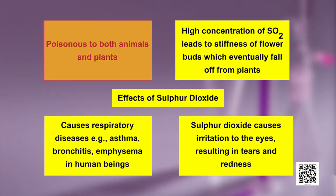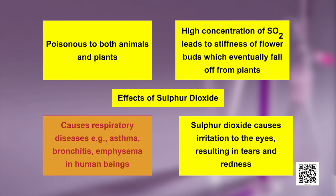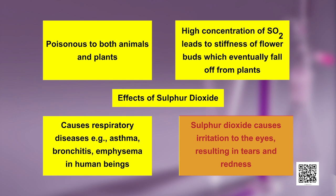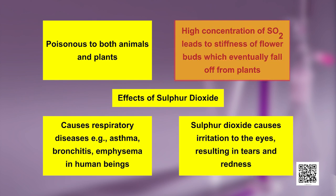Now let us discuss gaseous air pollutants. The first pollutant is oxides of sulphur. Coal and oil contain sulphur impurities. When we burn these fuels, the sulphur also burns to form oxides of sulphur. The most common oxide of sulphur is sulphur dioxide, SO2. Sulphur dioxide gas is very poisonous to both animals and plants. Even low concentrations of SO2 cause respiratory diseases such as asthma, bronchitis, and emphysema in human beings. Sulphur dioxide causes irritation to the eyes, resulting in tears and redness. High concentration of SO2 leads to stiffness of flower buds which eventually fall off from plants.